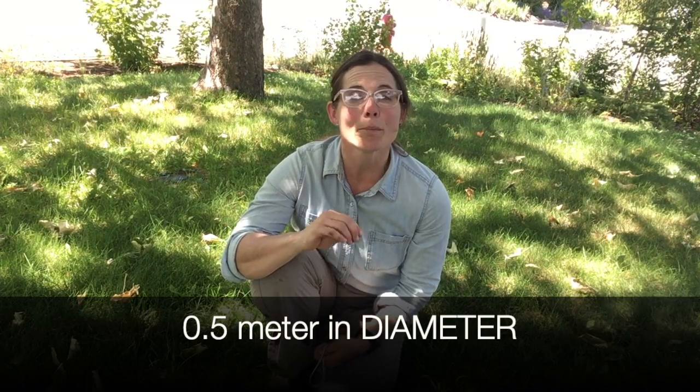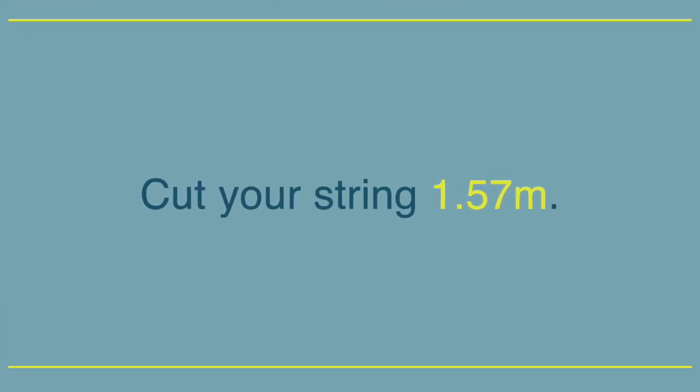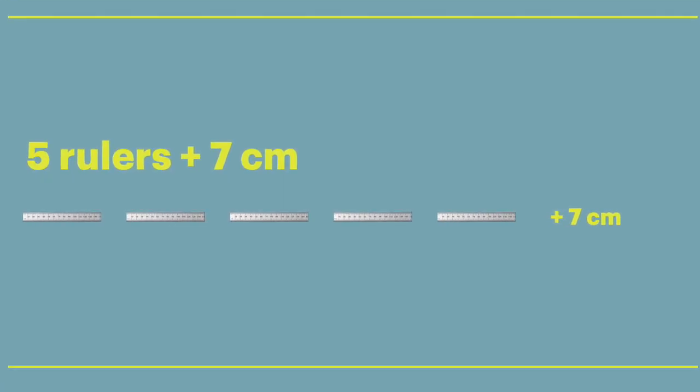To measure species richness, we're going to create a sampling tool — just some string formed into the shape of a circle. Our circles need to be one half meter in diameter, or 0.5 meters. Diameter is the length from one side of a circle to the other, passing through its center. To create a half-meter diameter circle, cut your string 1.57 meters long — or for easy measuring, 5 ruler lengths plus 7 centimeters.